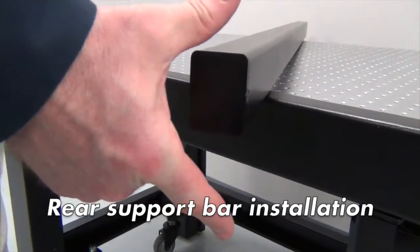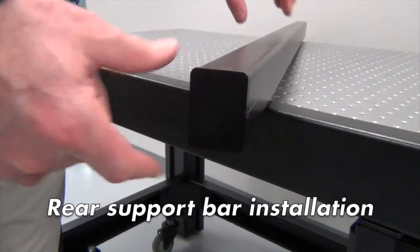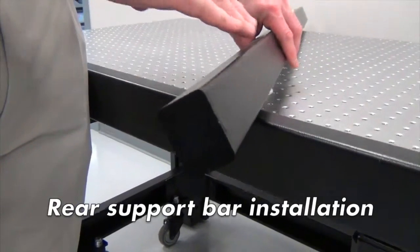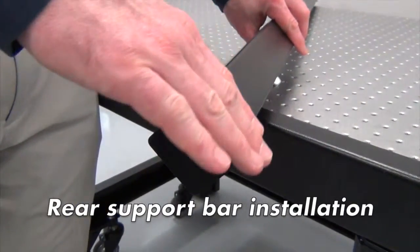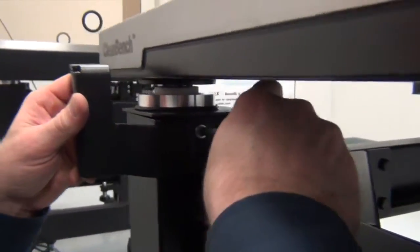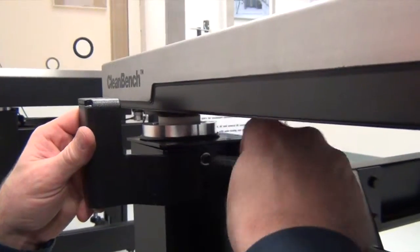The rear support bar is less tall and has a smaller cross section than the front. It does not have a slot on the back edge. The assembly of the rear bar is identical to the front support bar.